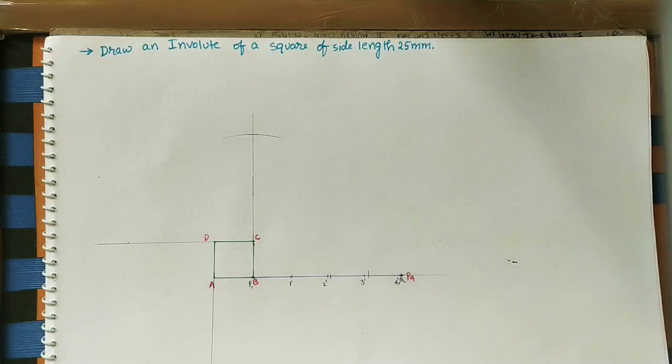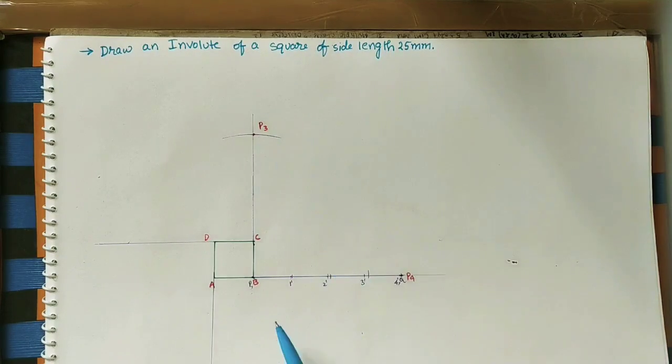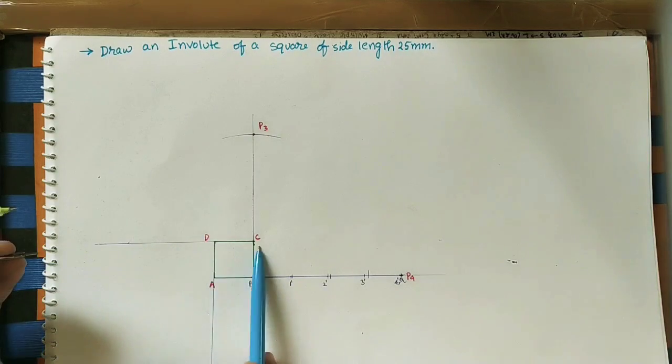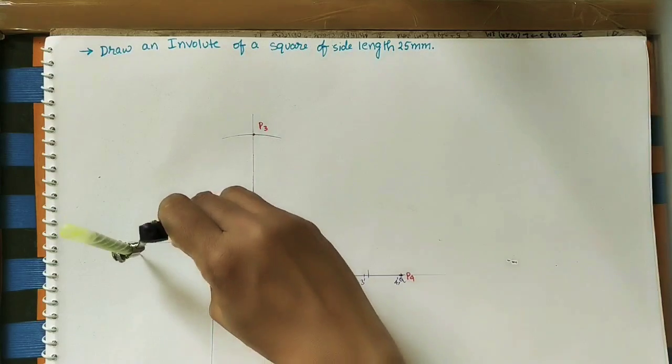After marking P3, take the P2 length using the compass and mark it on the third side DC. With D as center, mark the intersection point as P2.